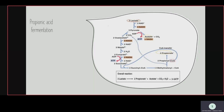In propionic acid fermentation, two propionate and acetate are the products. In the overall reaction, three lactate is converted into two propionate, acetate, carbon dioxide, water, and three to five ATP molecules. At the second step, when pyruvate is converted into acetate, an ATP molecule is formed.